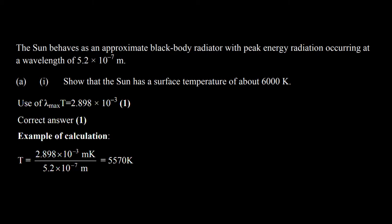We have to prove that the temperature of the Sun is 6000 Kelvin. So we can simply use Wien's law, which is lambda max times temperature equals a constant value, which is 2.898 times 10 to the power minus 3.